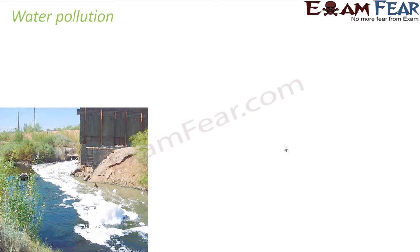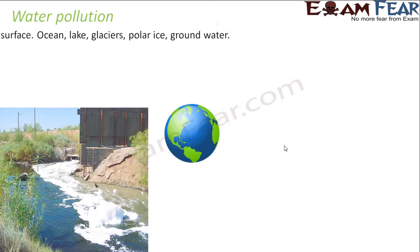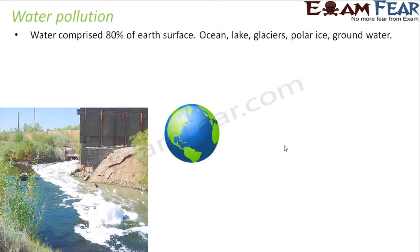Now let's talk about water pollution. Water is almost 80% of the earth — that's why it's called the blue planet, because most of it is water.